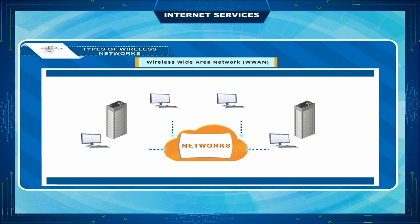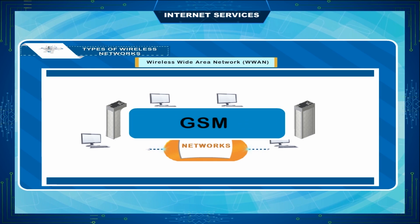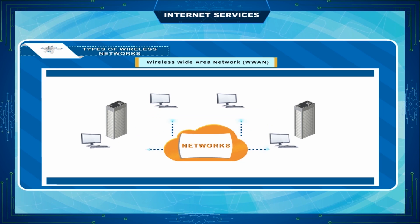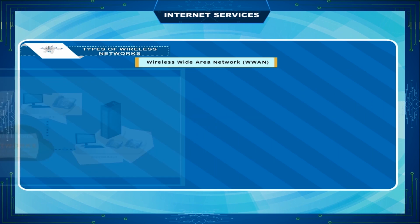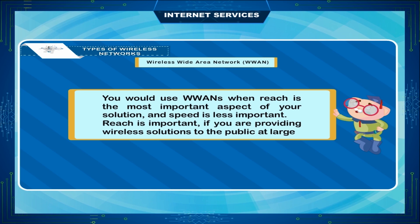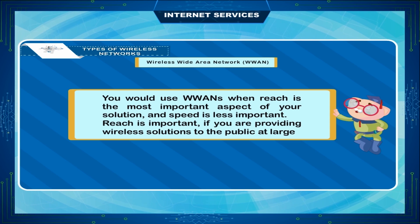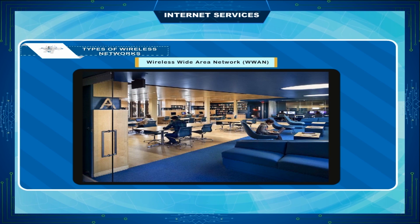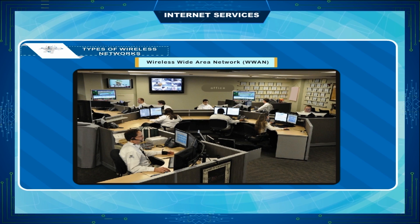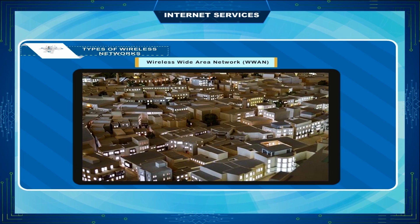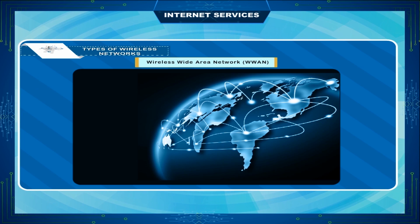There are voice plus data networks — GSM and GPRS are examples of such wireless networks. You would use WWAN when reach is the most important aspect of your solution and speed is less important. Reach is important if you are providing wireless solutions to the public at large — for example, a company that wants to give its employees wireless access to its corporate data whether they are in the office, across town, out of town, or in other countries.